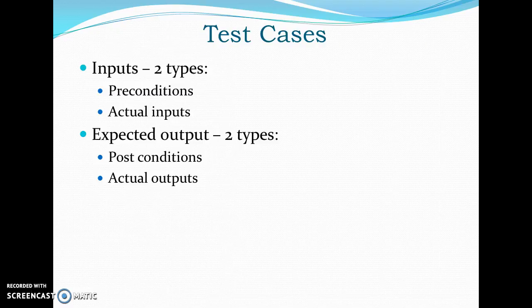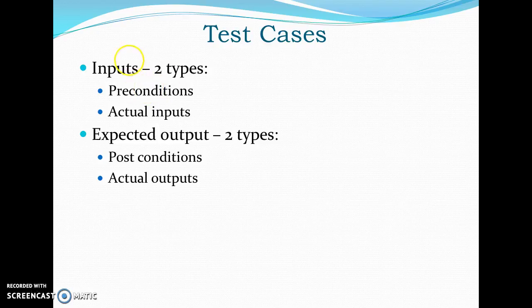Next, test cases. The essence of software testing is to determine a set of test cases for the item to be tested. Before we start testing, we need to clarify what information should be in a test case in terms of its inputs and its outputs. Inputs can be of two different types, namely preconditions and actual inputs. Preconditions are the circumstances that hold before the execution of a test case, and the actual inputs are the inputs identified by some testing methodologies. Expected outputs are also of two different types, namely post conditions and actual outputs. Post conditions are the conditions that prevail after the execution of the test case, and the actual outputs are the outputs expected from the application or program that was tested.